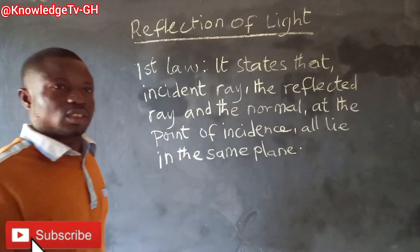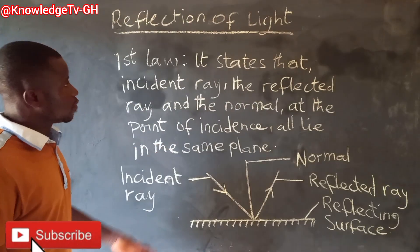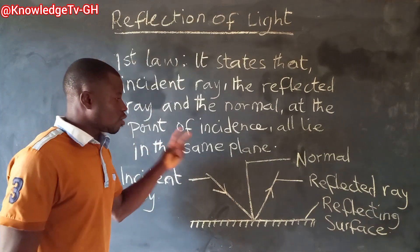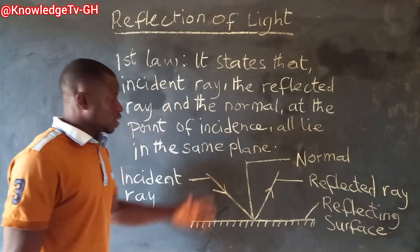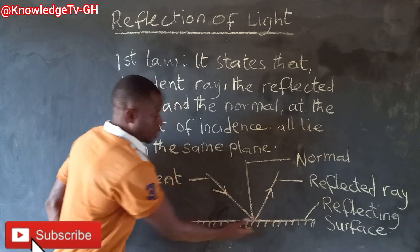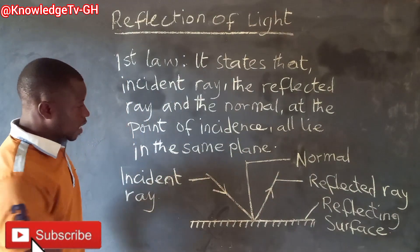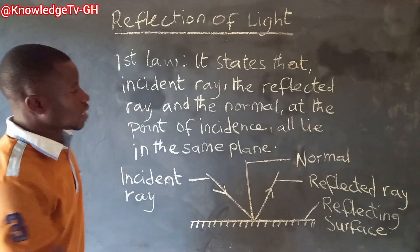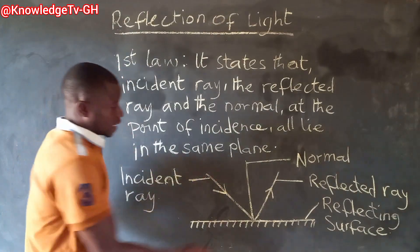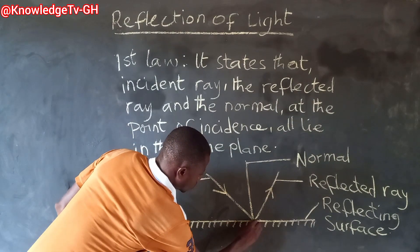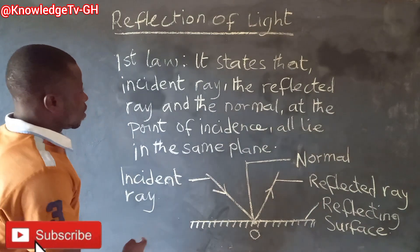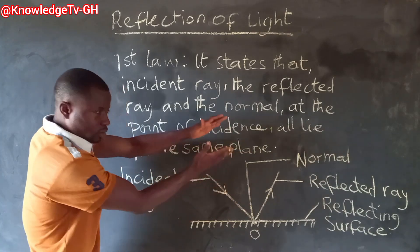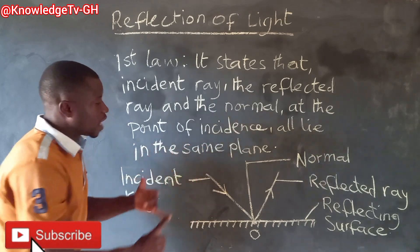So now let's go to the board and represent this diagrammatically. From the first law, it says that the incident ray, the reflected ray, and the normal at the point of incidence all lie in the same plane. So this is a mirror — one plane and another plane. This is the incident ray, and this is the normal. The normal is aligned from the perpendicular to the reflecting surface. So at the point of incidence, both the incident ray, the reflected ray, and the normal all lie in the same plane.